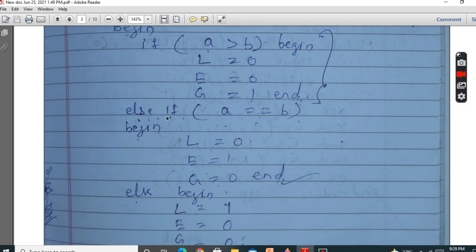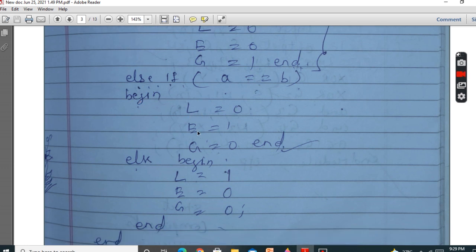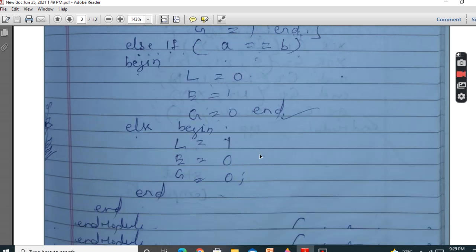Then again, else if A equal to B, that means A is equal to B, then begin. Same, L is equal to 0, E equal to 1, G is equal to 0. End.